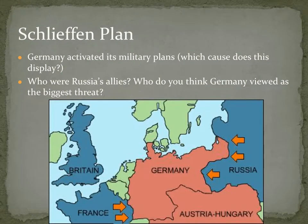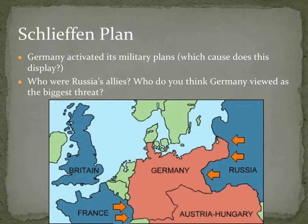This brings into play militarism. Germany, once it declared war on Russia, activated its military plans — remember, they had a plan for every possible situation. This plan was called the Schlieffen Plan. To understand it, we need to talk about who Russia's allies were. Because Russia had allies in Britain and France, Germany realized it would be fighting a two-front war: against Britain and France on the west, and against Russia on the east.